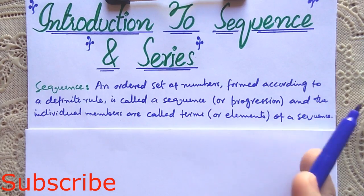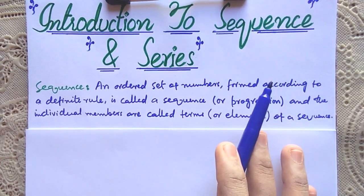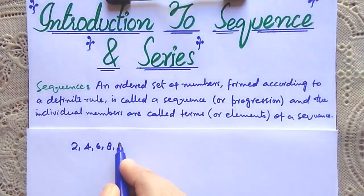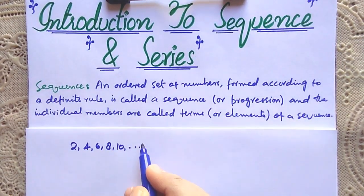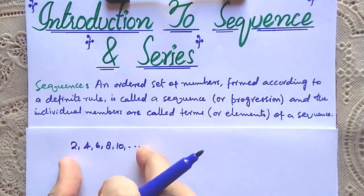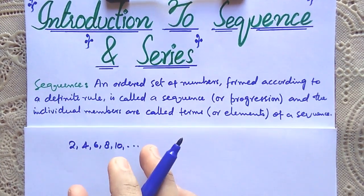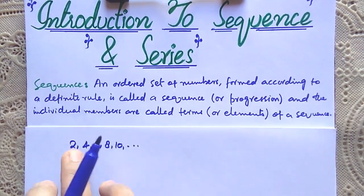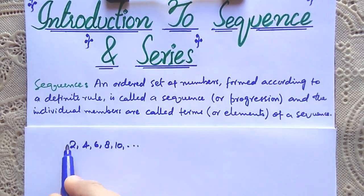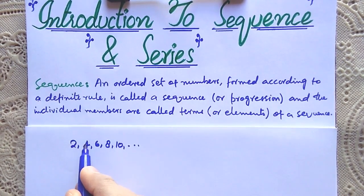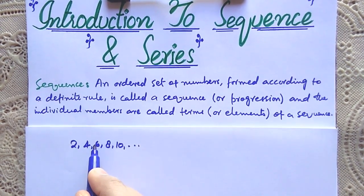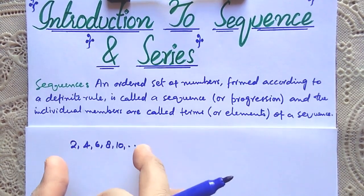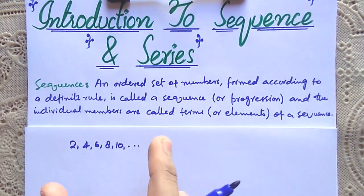A sequence is a set of numbers arranged in a particular order. For instance, 2, 4, 6, 8, 10, and so on. These numbers are arranged in a particular order — their common difference is the same: 4 minus 2 equals 2, 6 minus 4 equals 2, 8 minus 6 equals 2, 10 minus 8 equals 2, and so on. So it is called a sequence because these numbers are arranged in a particular order.